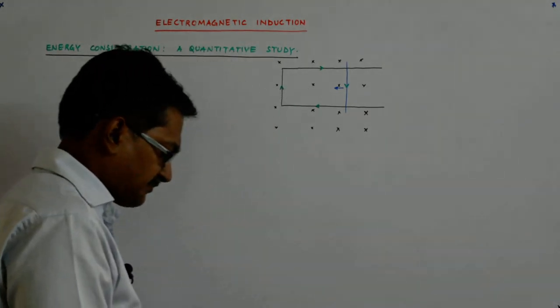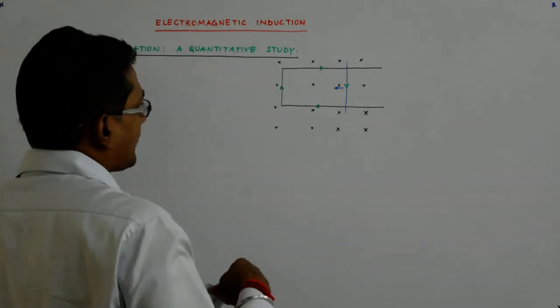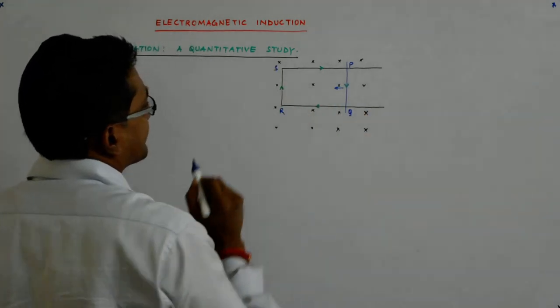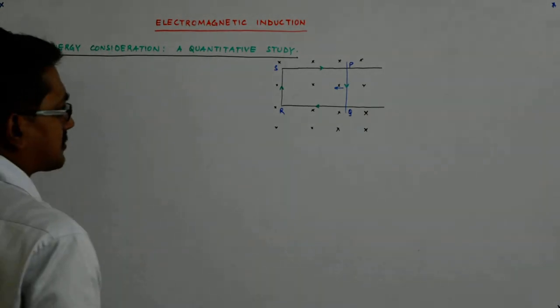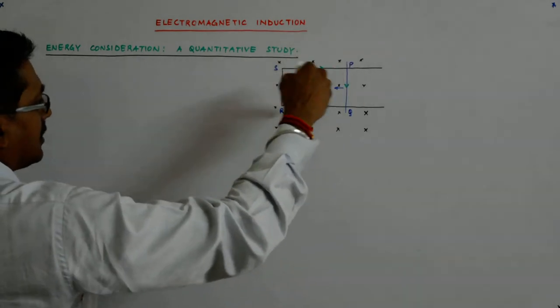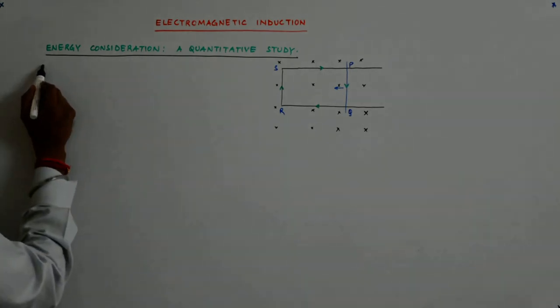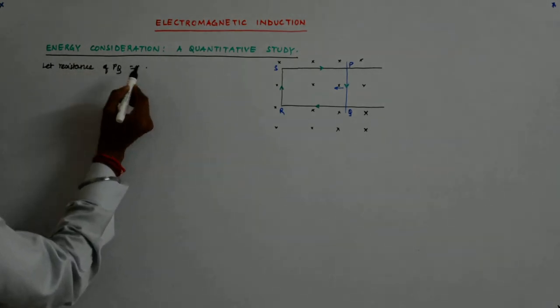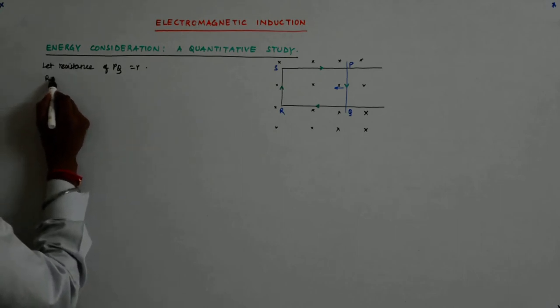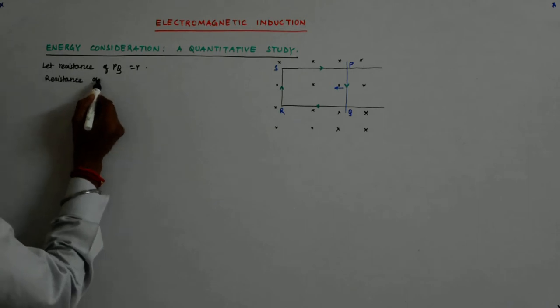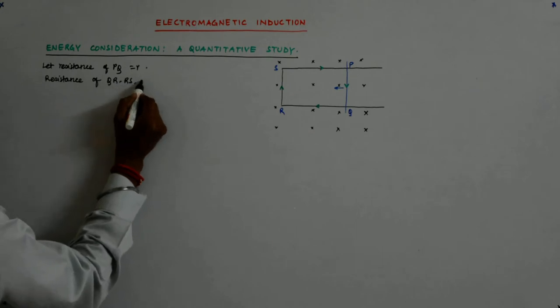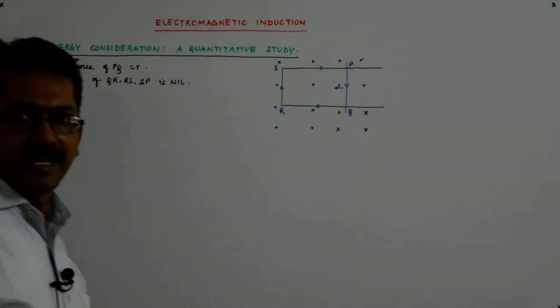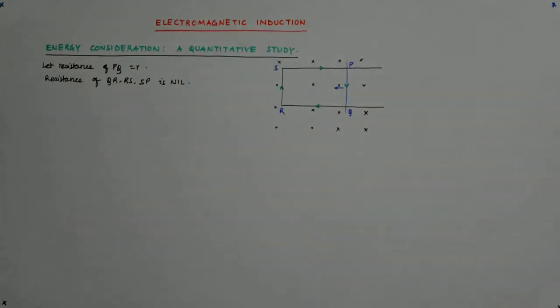Now let us try to analyze it further. Let us say that this is P and Q and R and S. Let us say that PQ has some resistance while QR, RS and SP do not have any resistance. So let resistance of PQ be equal to R and resistance of QR, RS and SP is nil.